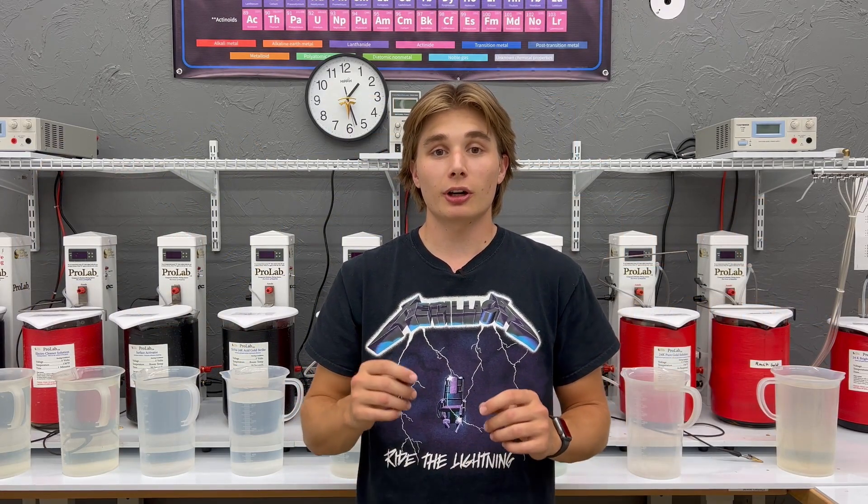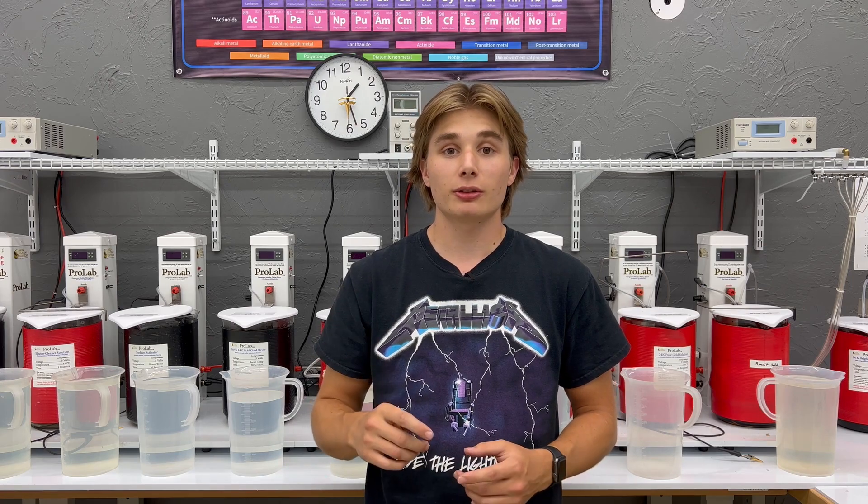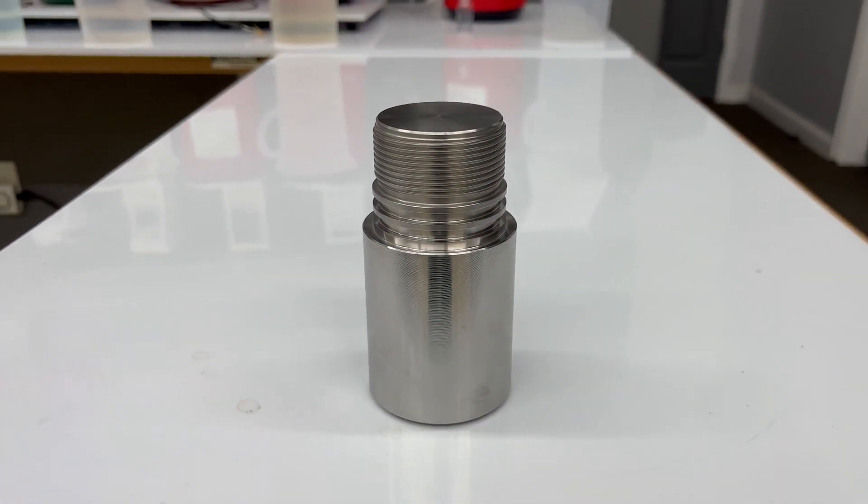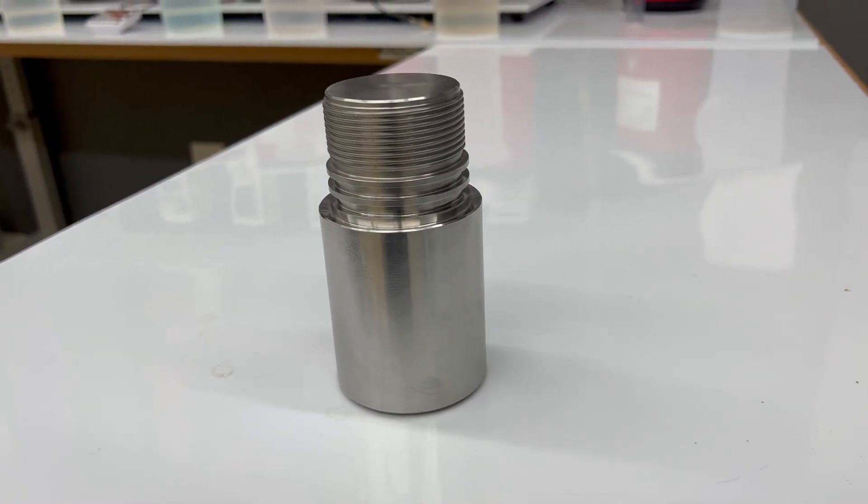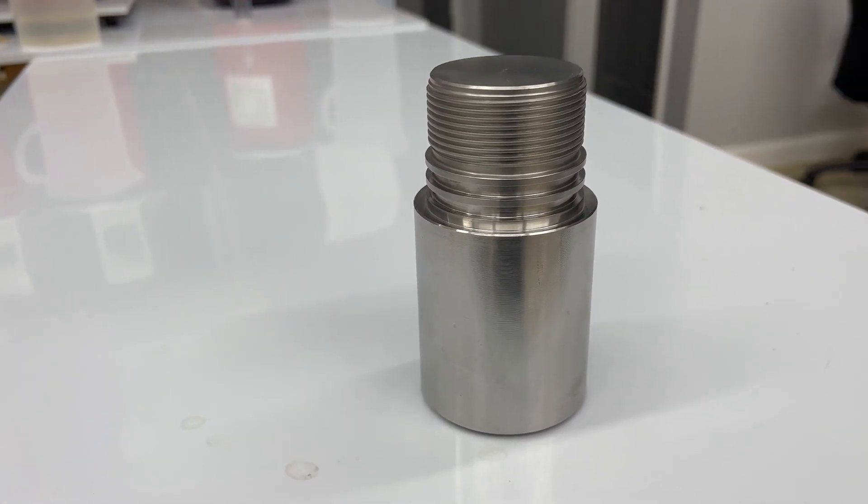What is up everybody, Golden Holden here. Today we are going to be using copper strike to plate onto some steel using the universal plater. What we are going to be plating today is this machined steel part.